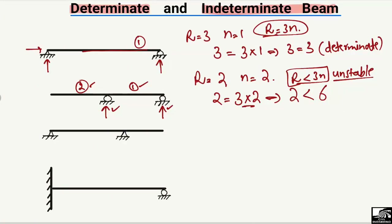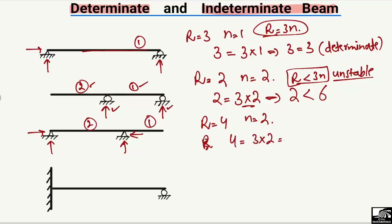Now the third beam has two hinge supports. The support reactions are: vertical, horizontal, vertical, horizontal — giving four support reactions, so r equals 4. There are two members, so n equals 2. Applying the formula: r = 3n → 4 vs. 3 × 2 = 6. Since 4 is less than 6, this beam is also an unstable beam, and we must provide additional supports to increase its stability.